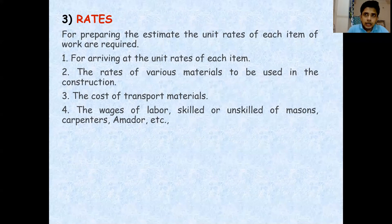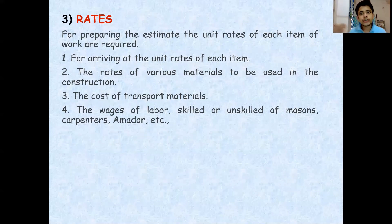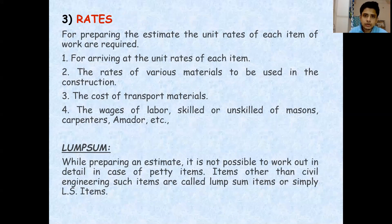These schedules of rates are not published every year, but rates change frequently. So the department allows us to add certain increments. For example, if the Assam schedule of rates was published in 2015 and we want to do work in 2020, the department will say that based on the current market situation, you can increase the 2015 rates by three, four, or five percent. We multiply the rates by that factor and find out the estimated cost.